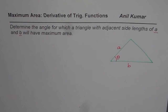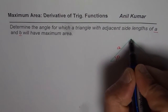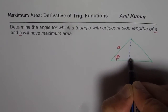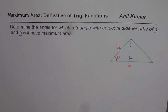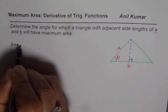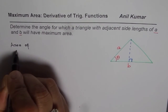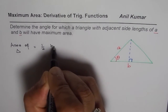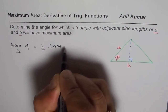Let us see how to solve such a question. This is going to form the base for most of our questions which are about to come. To find the area of a triangle, we need to draw a perpendicular. Area of a triangle is equal to half base times height.